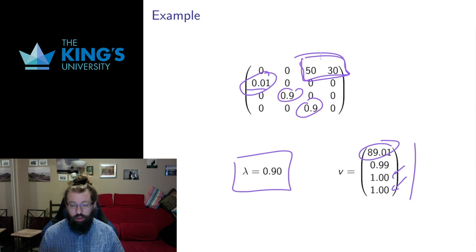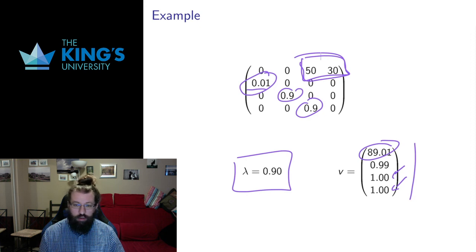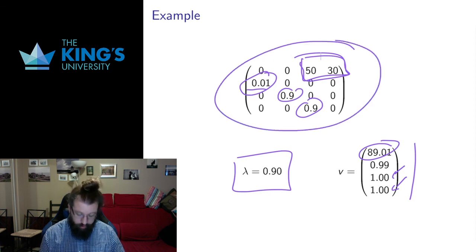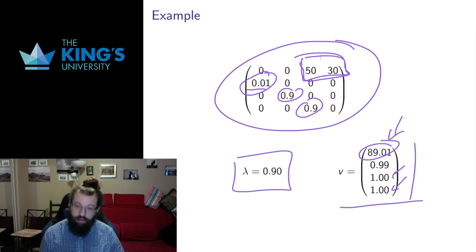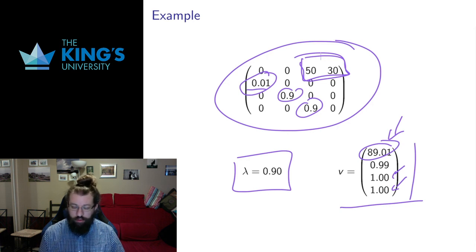That's the idea of Leslie matrices — a concrete example showing how to analyze a model when you know the states (populations in age categories) and the coefficients. Notice that everything here is non-negative, which makes sense since population values, survival, and fecundity can't be negative. It's also reassuring that the dominant eigenvalue gives an eigenvector with all non-negative entries. This shows how the theorems and theory from the first video actually work out in practice.